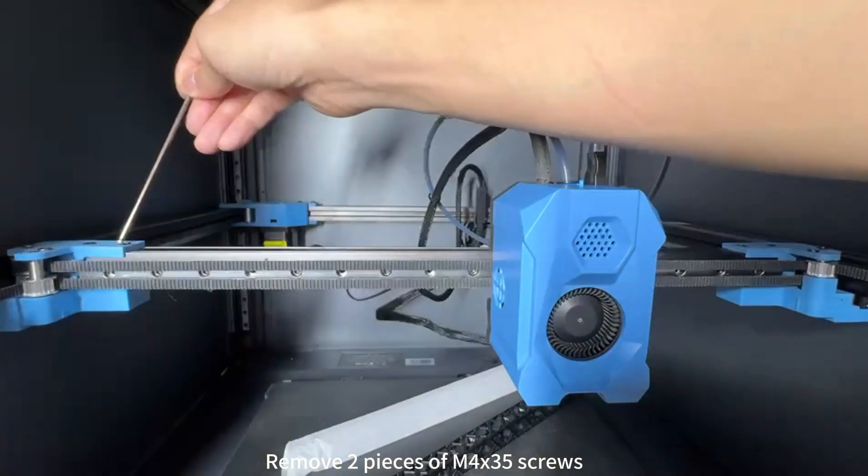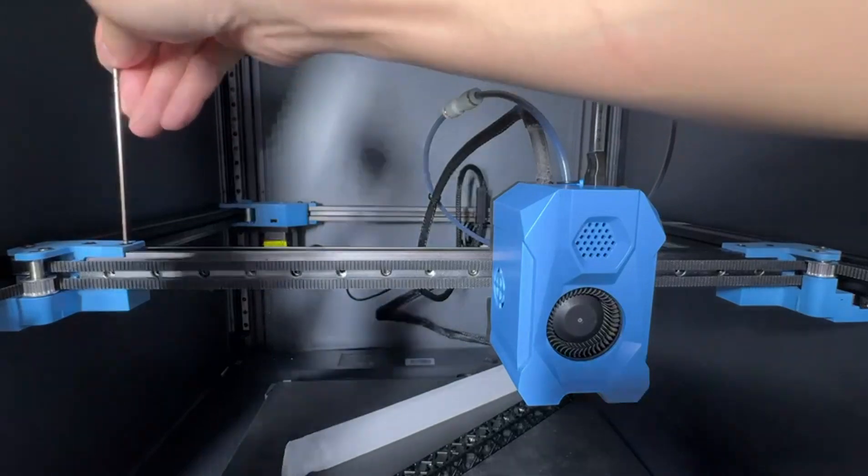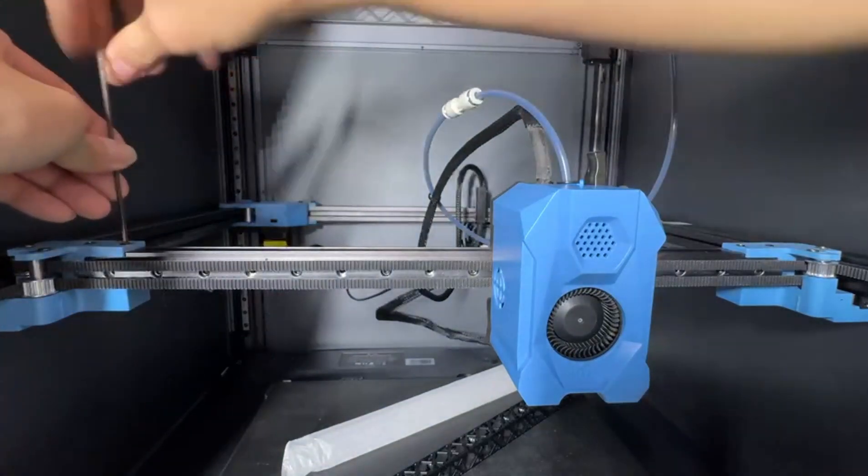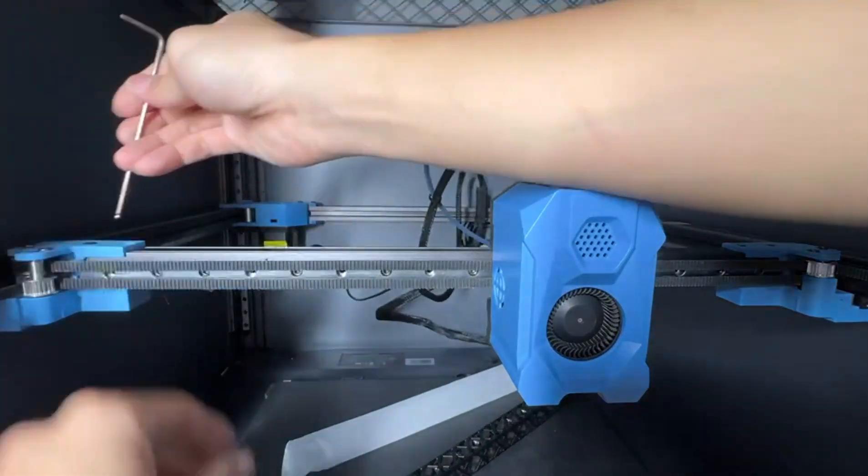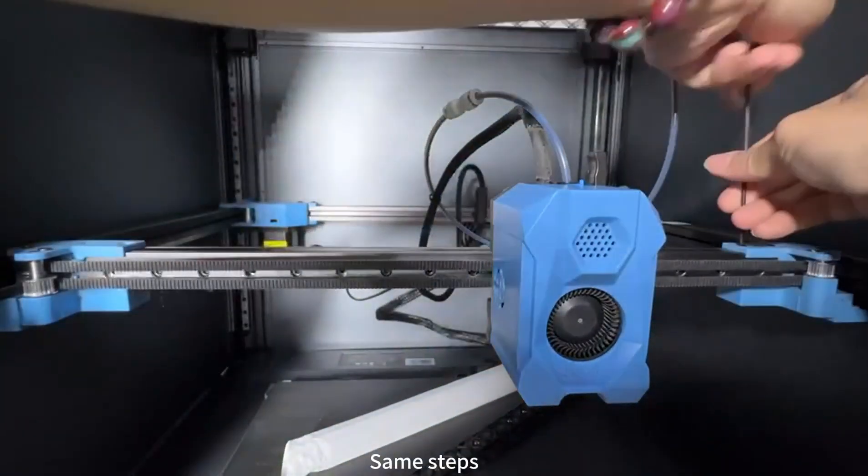Remove two pieces of M4 by 35 screws. Same steps.